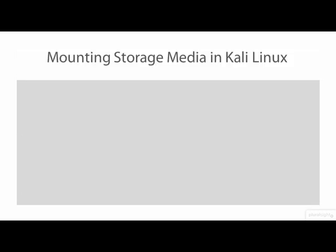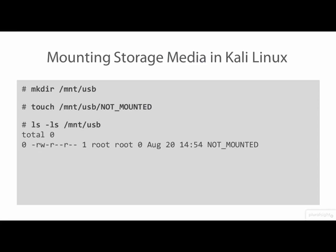Now let's manually mount the USB device in MNT. First, we need to manually create a mount point subdirectory. Next, I like to make a file in the mount point subdirectory to indicate when the media is not mounted. When you've listed the mount point subdirectory and see files and folders, the media is mounted. If instead you see a zero length file called not mounted, you know that the media is not mounted. This is a handy little trick that can save you from some head scratching. Now we manually mount the USB device using the mount command. The first argument is the device partition file to mount, the second is the mount point, and the O flag with the parameter of RO specifies to mount the partition as read-only, and no exec prevents the running of any binary files on the mounted file system.